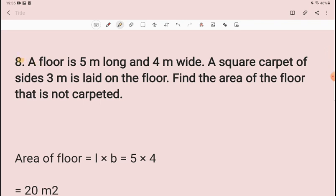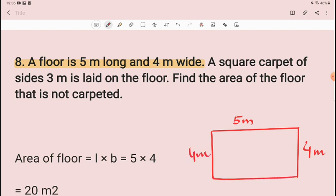Question 8 is: the floor is 5 meter long and 4 meter wide. So, a floor is 5 meter long, length is 5 meter, and the width is 4 meter. So, the floor is this way. It's 4 meter both sides, because both dimensions are always together. So this will be the floor.